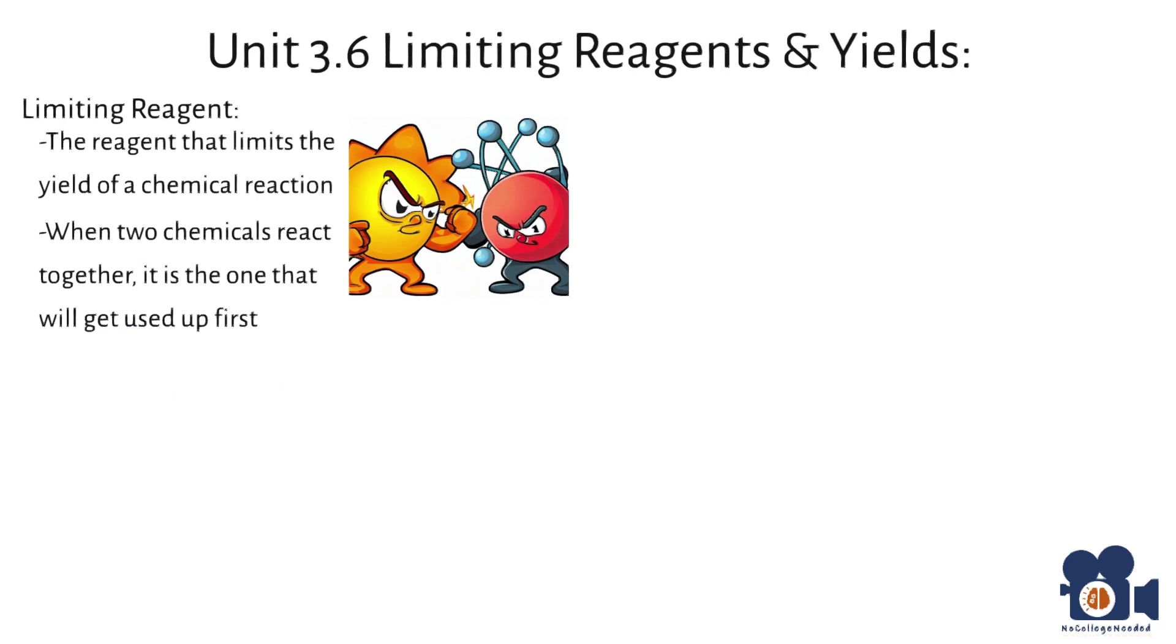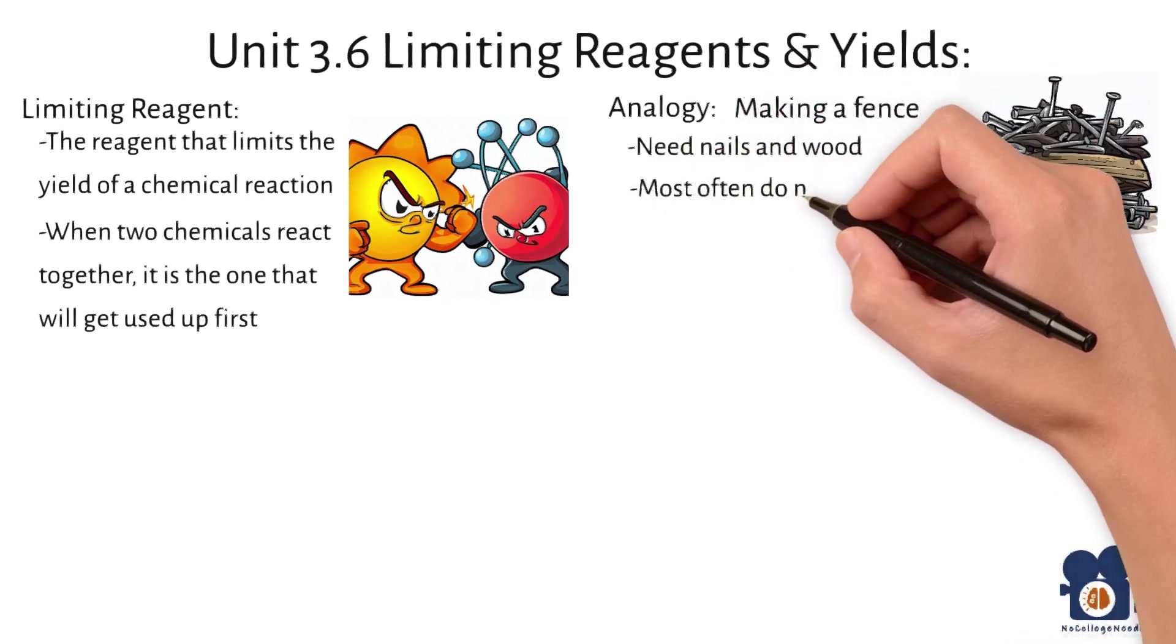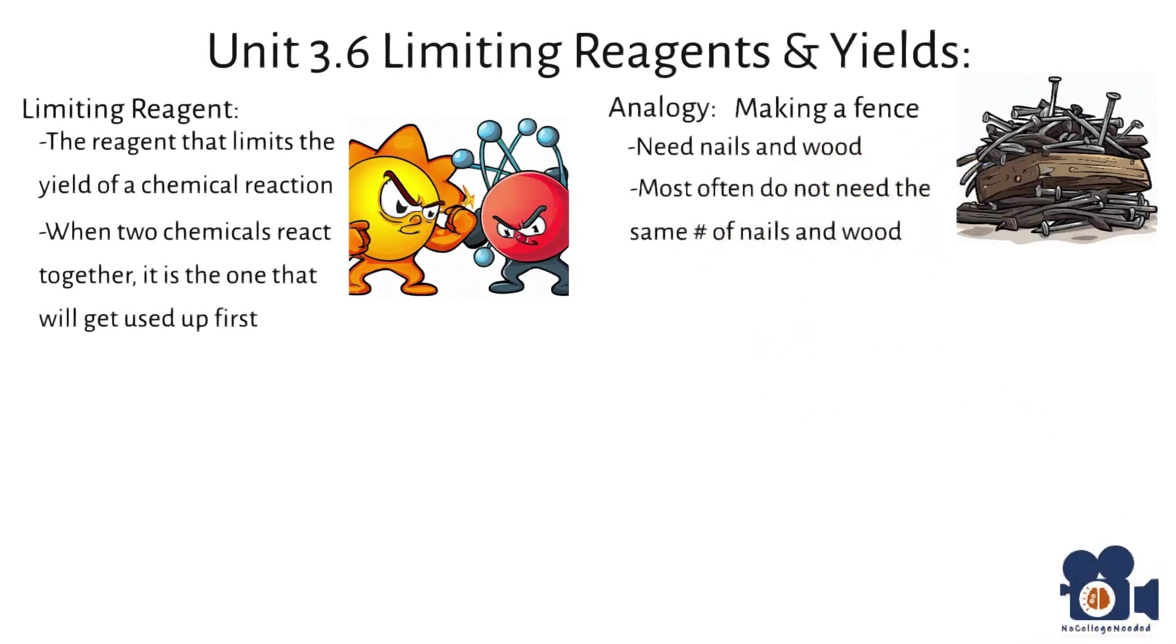A great analogy is the one we used in the previous unit, making a fence. To make a fence, you need nails and wood, but you most often do not need the same number of nails and wood. We can write the reaction of making a fence as such: Two nails plus wood going to nails two wood.